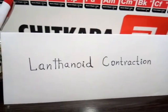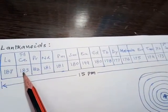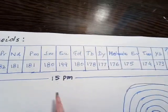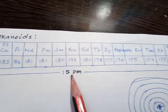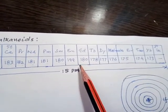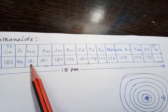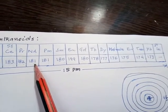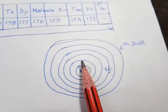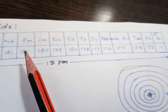Lanthanoids start from cerium, atomic number 58, up to lutetium. There is a decrease of 15 picometers across this series, and this decrease in atomic radii within the lanthanoid series is known as lanthanoid contraction. Now, what is the cause of this decrease?